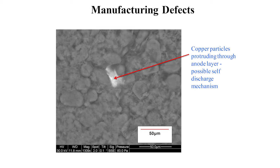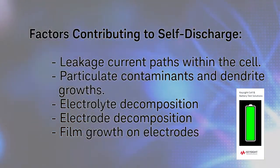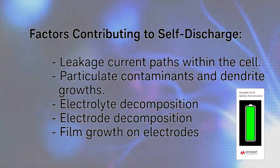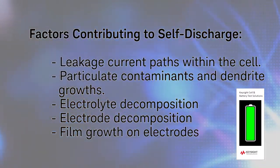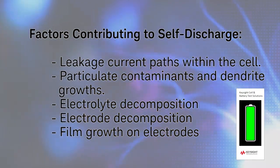These include leakage current paths within the cell. Particulate contaminants and dendrite growths can produce internal micro-shorts, creating such leakage current paths. Other factors include electrolyte decomposition, electrode decomposition, and film growth on electrodes.